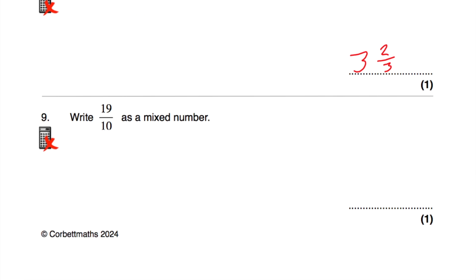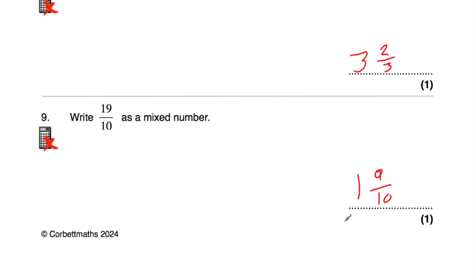Question number 9: write 19 tenths as a mixed number. How many 10s go into 19? That'll be 1, and then we have 9 left over, so it's going to be 9 tenths. The answer is 1 and 9 tenths. So 19 tenths as a mixed number is 1 and 9 tenths.